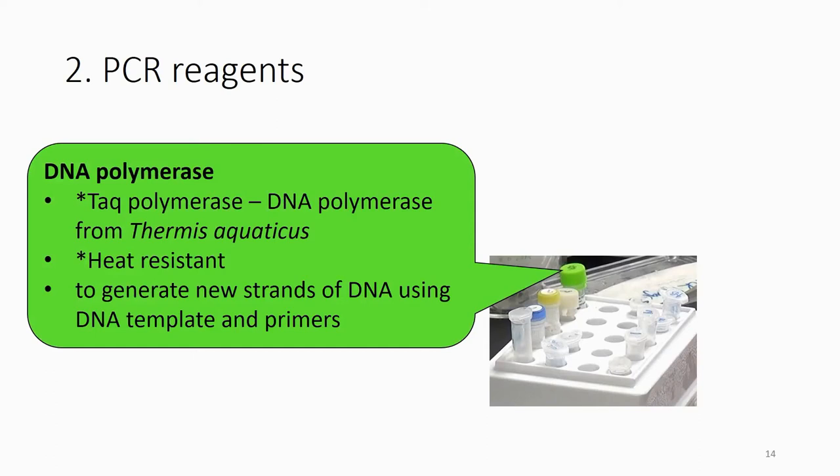You have the Taq polymerase. The polymerase that you use for the PCR is very different from the human polymerase. This Taq polymerase is extracted from the bacteria, Thermus aquaticus. This bacteria lives in hot springs, so that means that all the enzymes in their body can stand at a very high temperature and will not be destroyed.